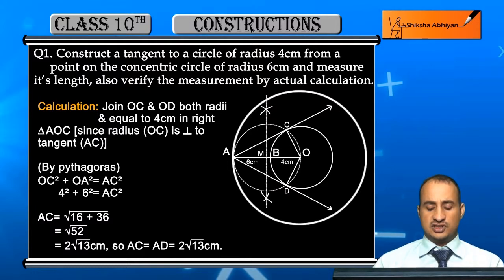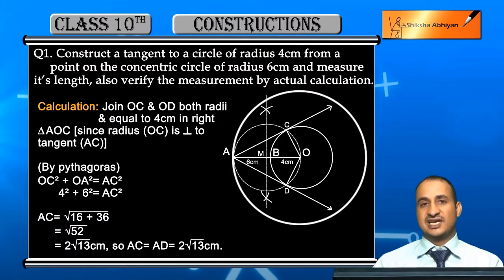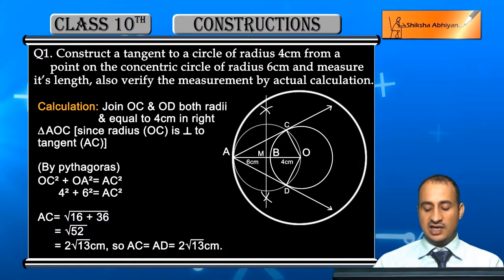Kya aayega na student? Square root of 52 kya aa sakta hai? 4 into root 13, aur 4 ko bahar laayenge to 2 ho jayega, to 2 square root of 13 cm. Yeh aa gaye actual calculation se tangent AC and AD both are 2 root 13 cm.